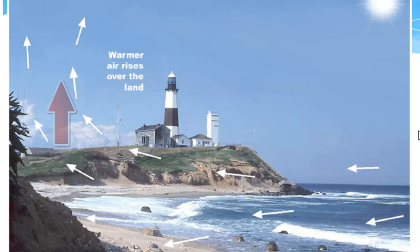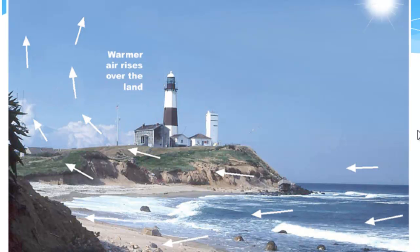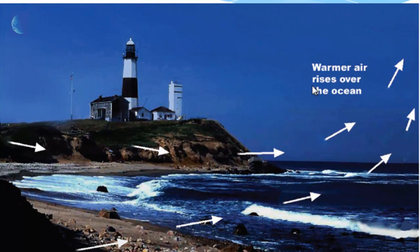This is called a sea breeze. At night, the land cools more quickly than the water, so the ocean is warmer. The warmer air over the ocean then rises and pulls the air off the land. This is a land breeze.